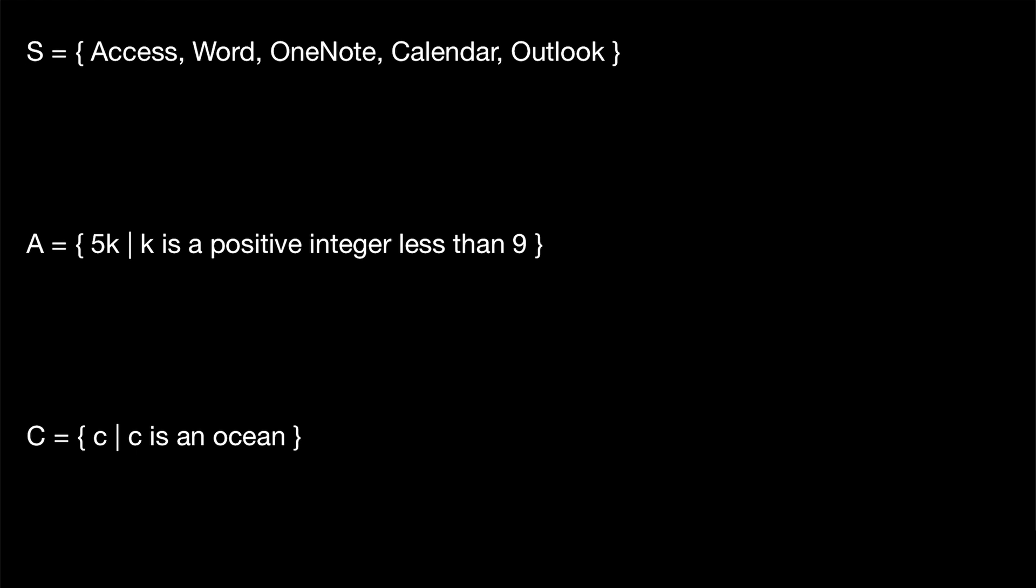Our set S contains a handful of different softwares. Microsoft software to be exact: Access, Word, OneNote, Calendar, and Outlook. What is the cardinality of this set? Well, it's just the number of elements it contains. If we count them up, Access, that's one. Word, that's two. OneNote, that's three. Calendar, that's four. And Outlook, that's five. So the cardinality of S is equal to five. It contains five elements.